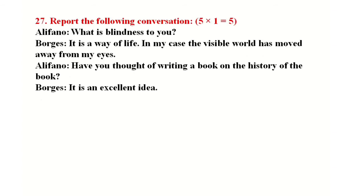Next, report the following conversation. This is reported speech — indirect speech. The dialogue is between Alphano and Vargas. Alphano asks: 'What is blindness to you?' Vargas replies: 'It is a way of life. In my case, the visible world has moved away from my eyes.' Alphano then asks: 'Have you thought of writing a book on the history of the book?' Vargas replies: 'It is an excellent idea.'